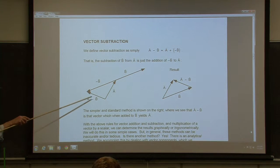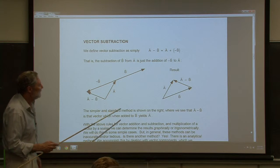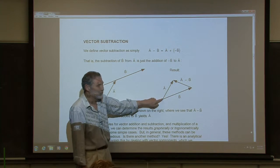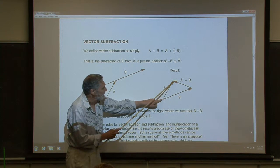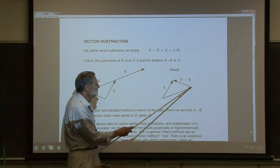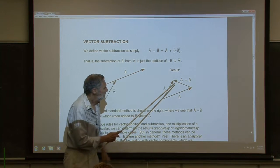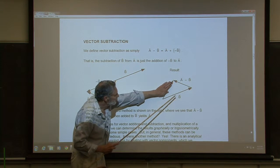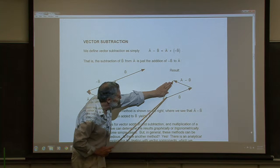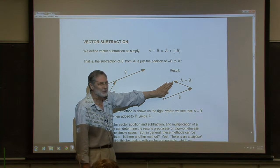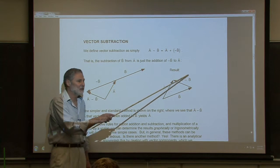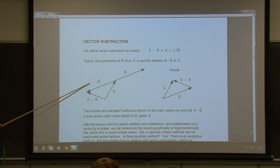A cleaner method: take the tails of the two vectors A and B and parallel transport them so the tails coincide at a point. Then A minus B is the vector running from the head of B to the head of A — you draw a line between the two heads running in that direction. This works because if you add B to A minus B, you get A.